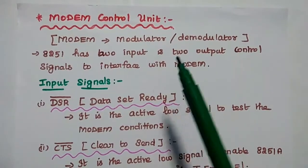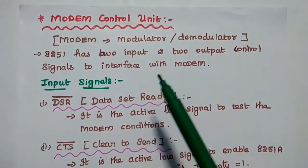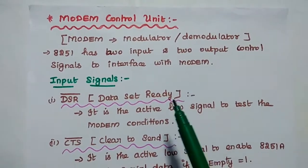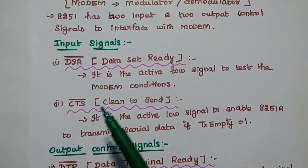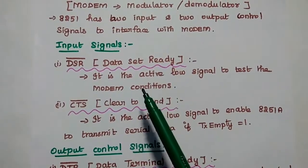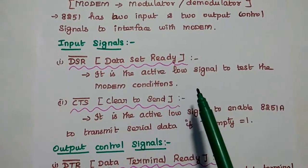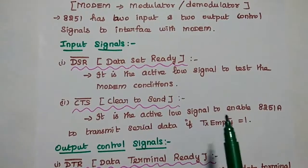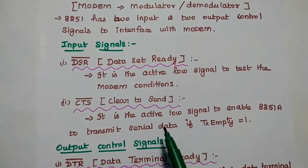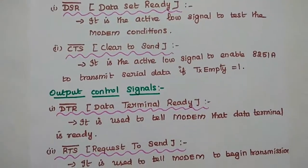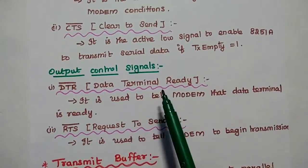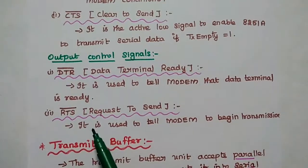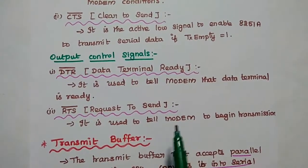The modem control unit interfaces with the modem (modulator/demodulator). The 8251A has 2 input and 2 output control signals for the modem. The two input signals are DSR bar (Data Set Ready) — an active low signal to test whether the modem/data set is ready — and CTS bar (Clear To Send) — an active low signal that enables the 8251A to transmit serial data when transmit enable is 1. The two output signals are DTR (Data Terminal Ready) — used to tell the modem the terminal is ready to transmit — and RTS (Request To Send) — used to tell the modem to begin transmission.